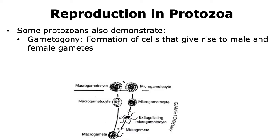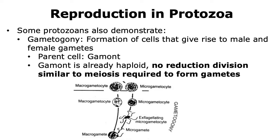Gametogony is another type of multiple fission observed in protozoa. In the case of gametogony, we again see karyogamy happening in the parent cell, followed by distribution of the cytoplasm. However, the parent cell, which is also called the gamont, will then give rise to the male and female gametes. It should be noted that the gamont is already haploid, and hence there is no reduction division similar to meiosis required to form the gametes. Thus, in the case of gametogony, we are seeing multiple fission with the purpose of giving rise to gametes.